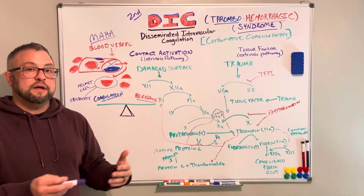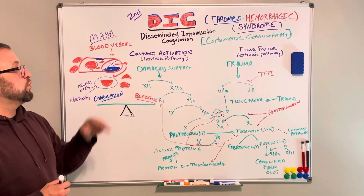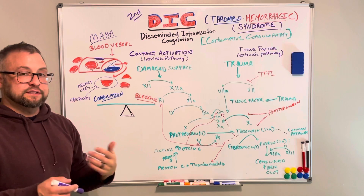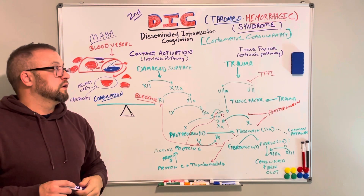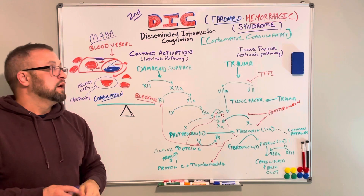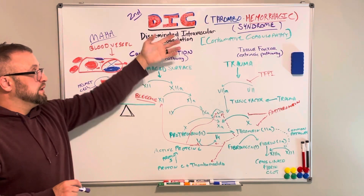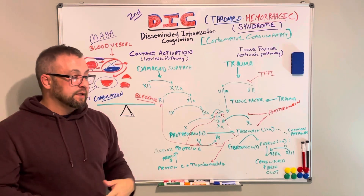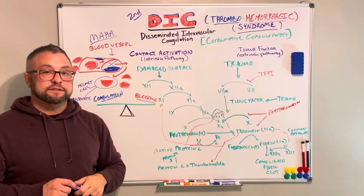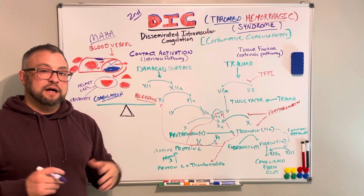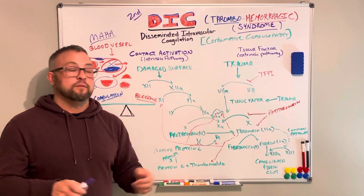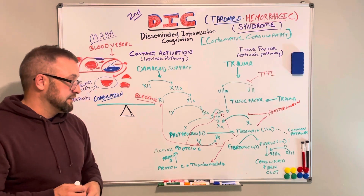DIC is a secondary process, so management focuses on treating the primary cause. Was it sepsis? Manage the sepsis. Was it amniotic fluid embolism or retained products of conception? Stabilize the patient — because in those cases, the main killer is not the embolism itself, it's DIC. Trauma? Manage the crush wounds. Additionally, because clotting factors are depleted, they must be replaced. Fresh frozen plasma contains these factors, but cryoprecipitate is like concentrated FFP — providing more clotting factors, specifically fibrinogen — to support clot formation and prevent patients from bleeding out.